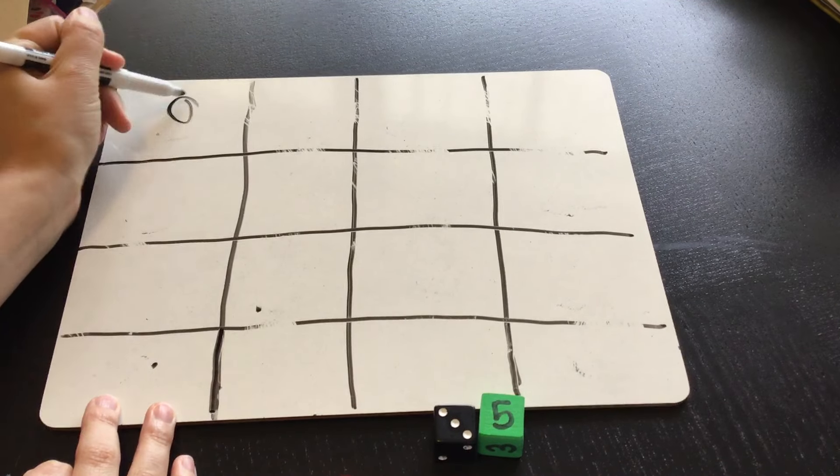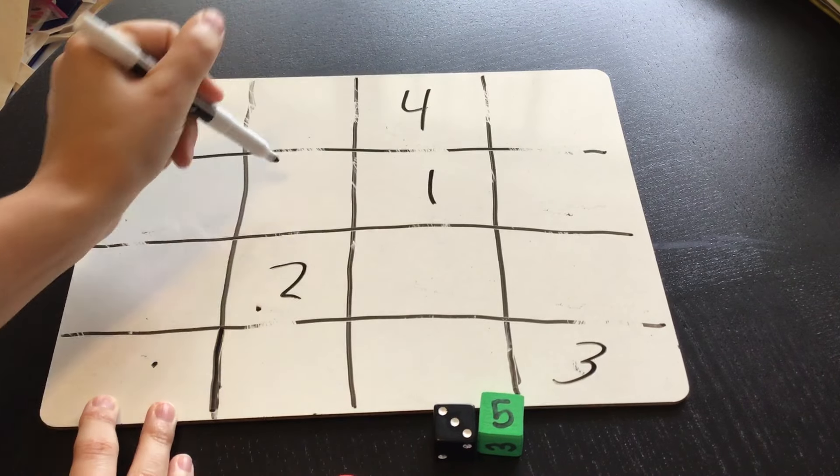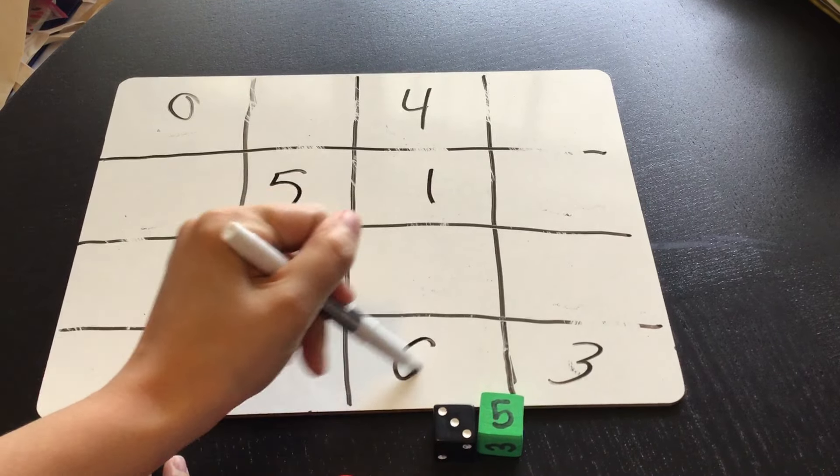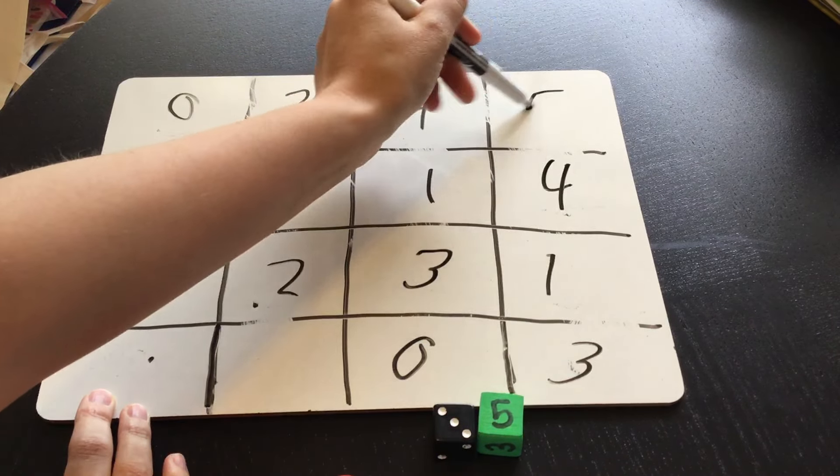Zero, one, two, three, four, five. Zero, one, two, three, four, five.